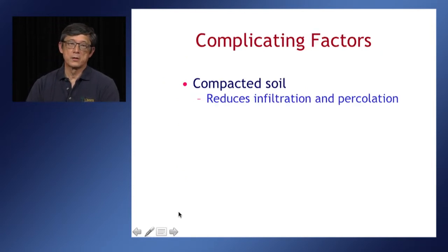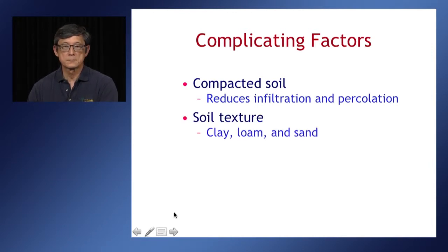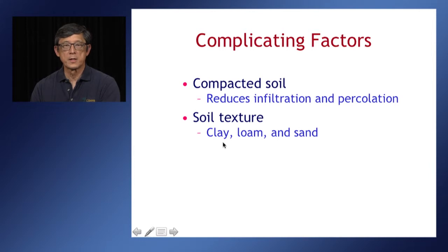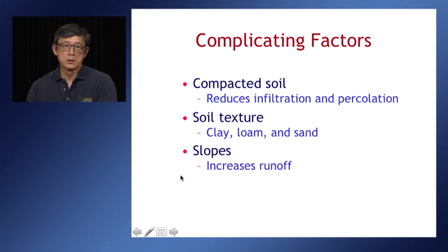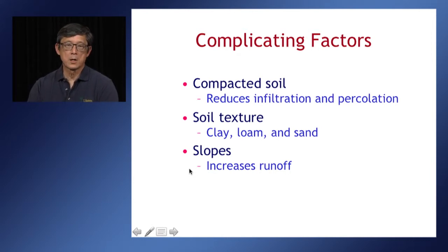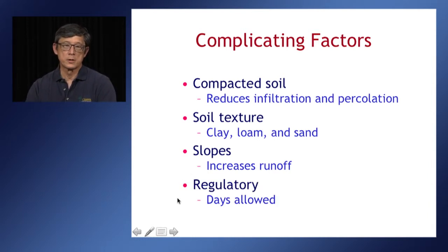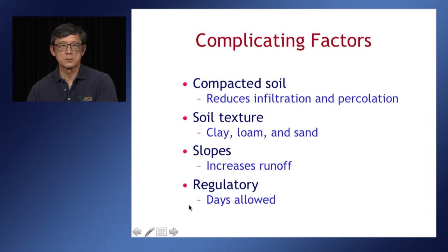Things that complicate our irrigation include compacted soils, which reduce the infiltration rate and cause premature runoff. Different soil textures affect how we irrigate — clay soils have lower infiltration rates than loams and sands, so we need to be aware of our soil type. If irrigating slopes, slopes increase runoff even with good infiltration rates and good soil texture. There are also regulatory issues — in some cases we are only allowed to irrigate on certain days, such as two days a week, and we must accommodate those regulations in our irrigation programs.